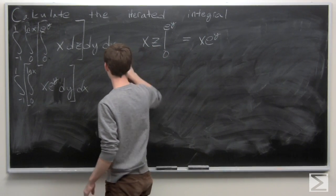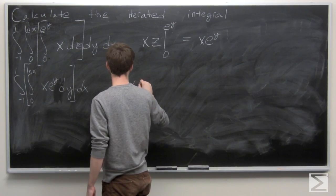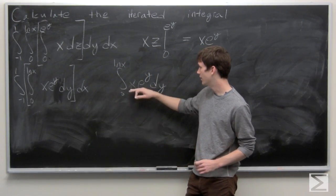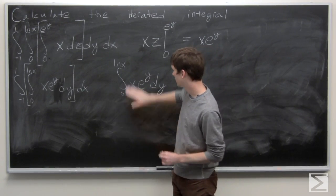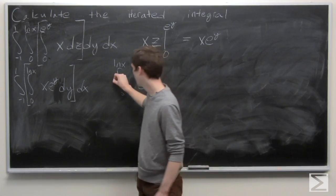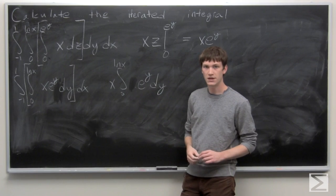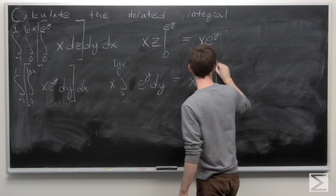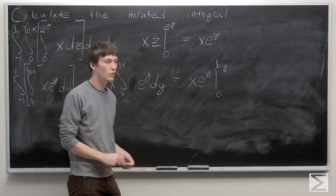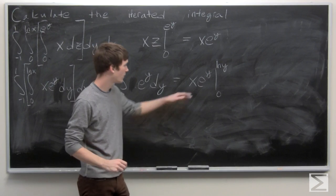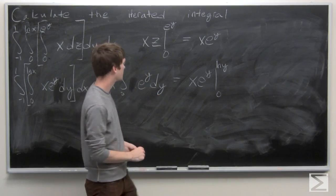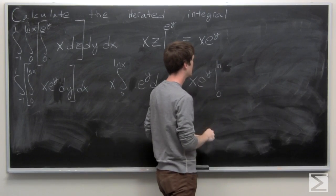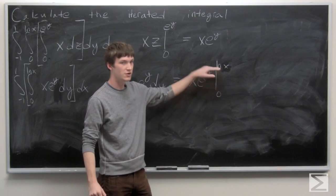We have the integral from 0 to ln x of x·e to the y. Since x is a constant with respect to y, we can bring it out. So we have x times the integral of e to the y dy, which is just x·e to the y. We evaluate that from 0 to ln x — correcting an earlier slip where I wrote ln y instead of ln x.